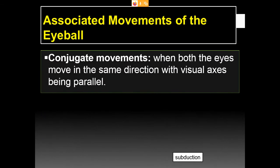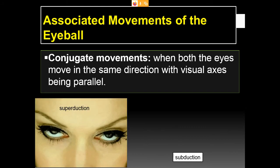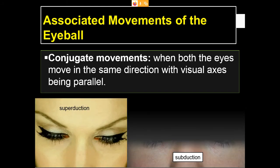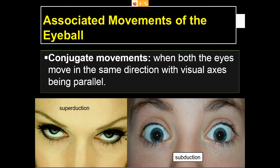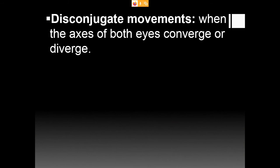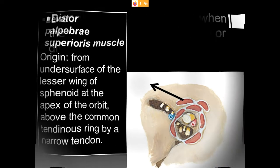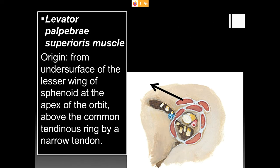Associated movements of the eyeball include conjugate movements — when both eyes move in the same direction with the visual axes being parallel, including superduction and subduction. Disconjugate movements occur when the axes of both eyes converge or diverge.